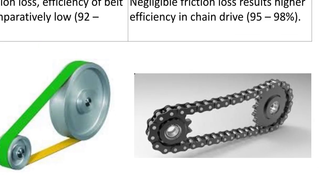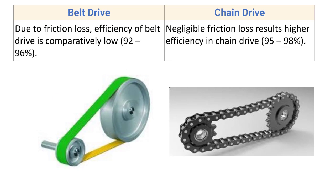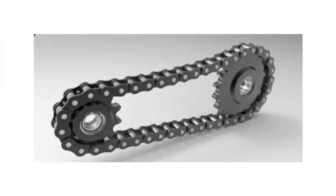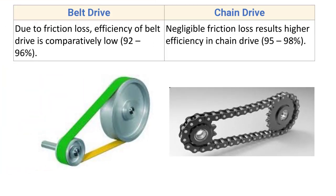In chain drive, negligible friction loss results in higher efficiency of 95 to 98 percent. Since power and motion are transmitted through successive engagement and disengagement of the chain from the sprocket with negligible friction, we achieve maximum efficiency in the range of 95 to 98 percent.